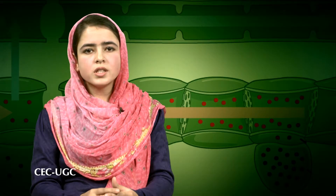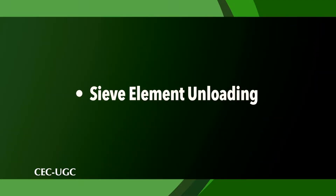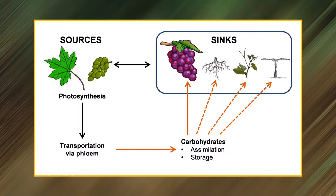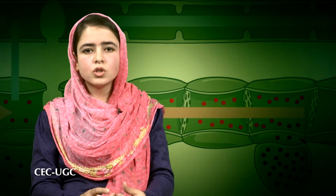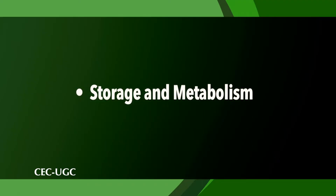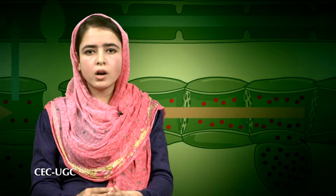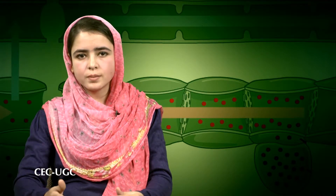Transport into sink organs such as developing roots, tubers, and reproductive structures is termed as import. The following steps are involved in the import of sugars into sink cells: number one, sieve element unloading — the process by which imported sugars leave the sieve elements of sink tissues; number two, short distance transport — after sieve element unloading, sugars are transported to cells in the sink by means of a short distance transport pathway, also called post-sieve element transport.